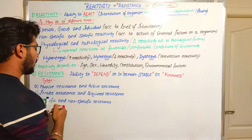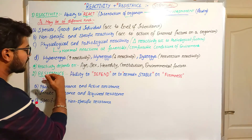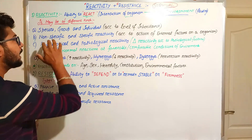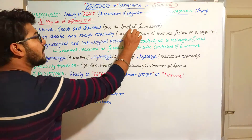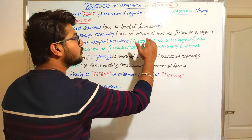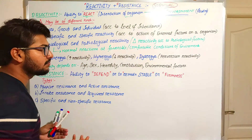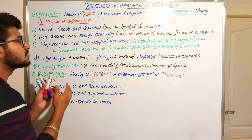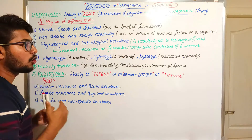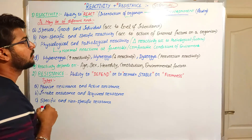Reactivity can be understood in terms of how diseases flow through hereditary or family charts. Reactivity has its own types. It can be divided according to the level of inheritance — species, groups, and individuals. It can be non-specific or specific reactivity according to the action of external factors. It can be physiological and pathological reactivity. And fourth, it can be increasing, decreasing, or distorted type of reactivity.